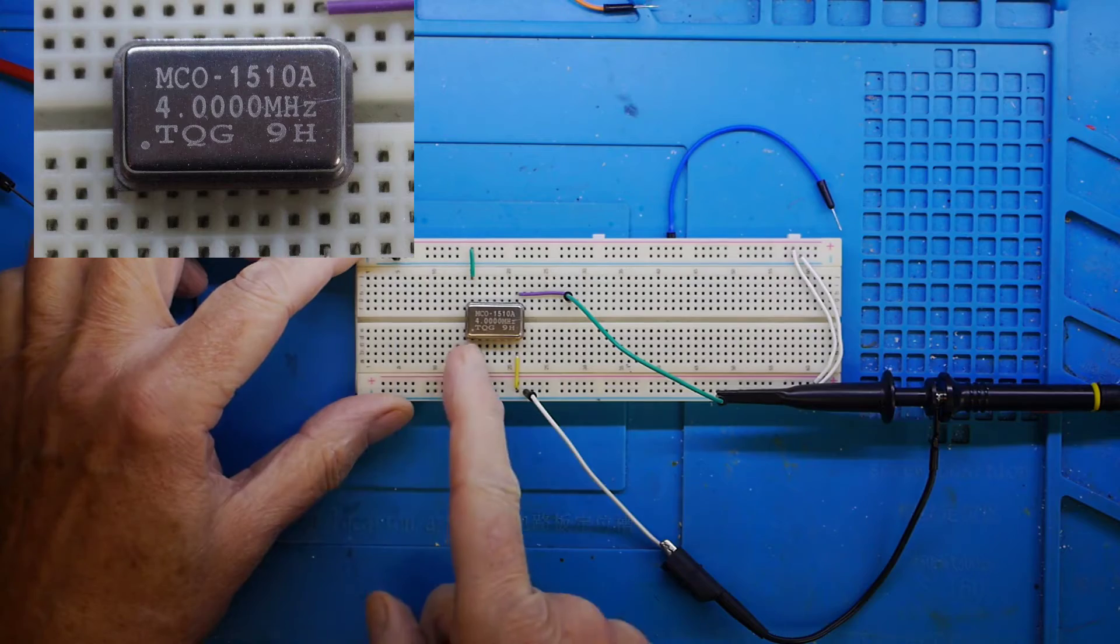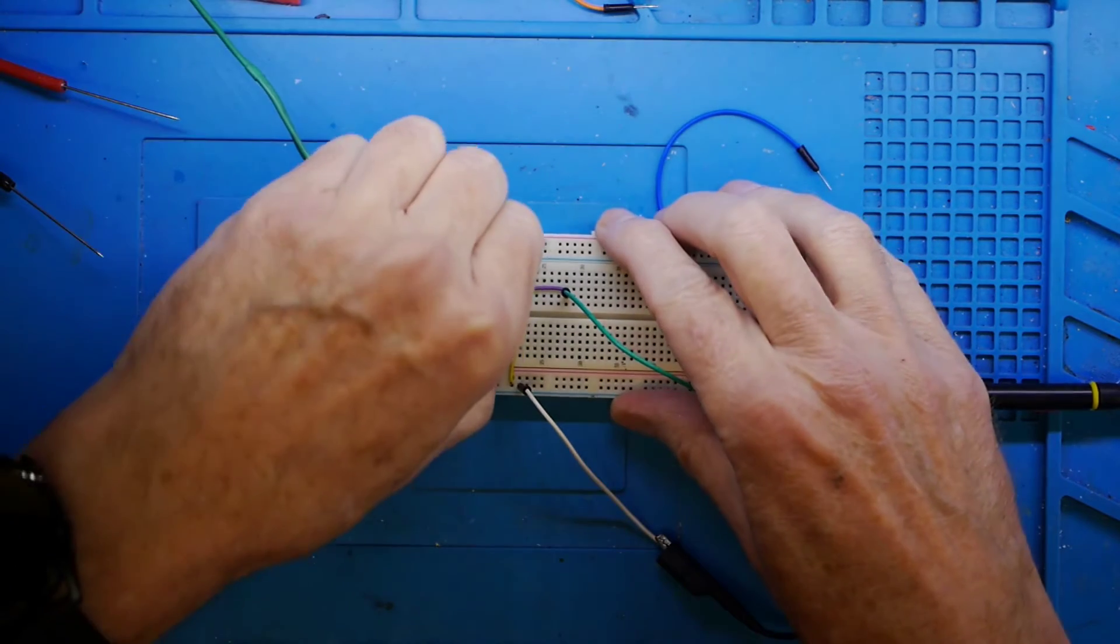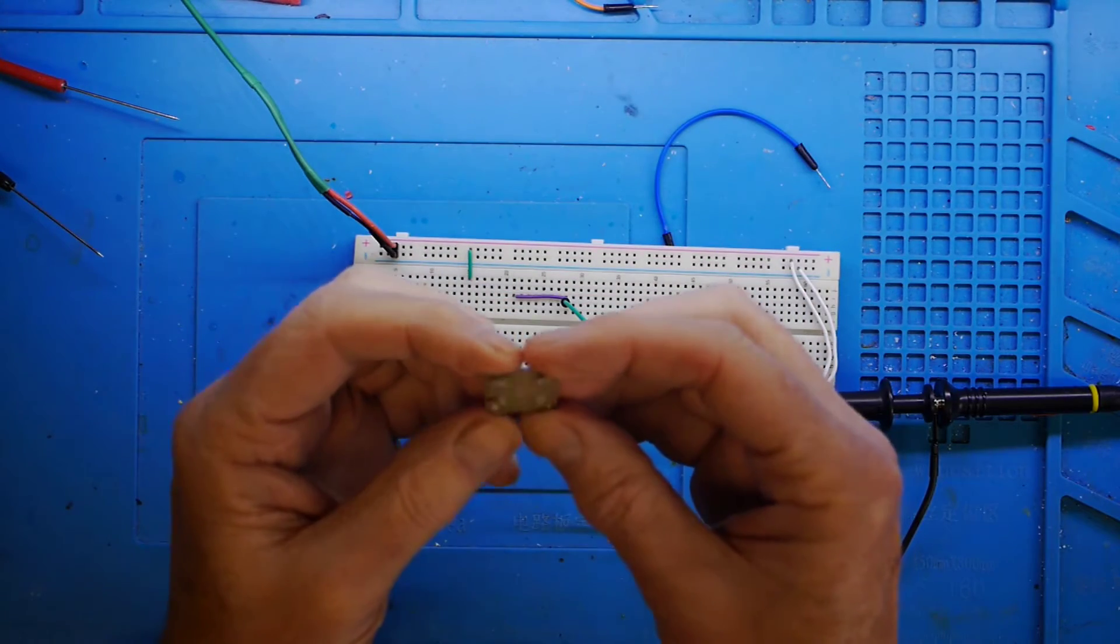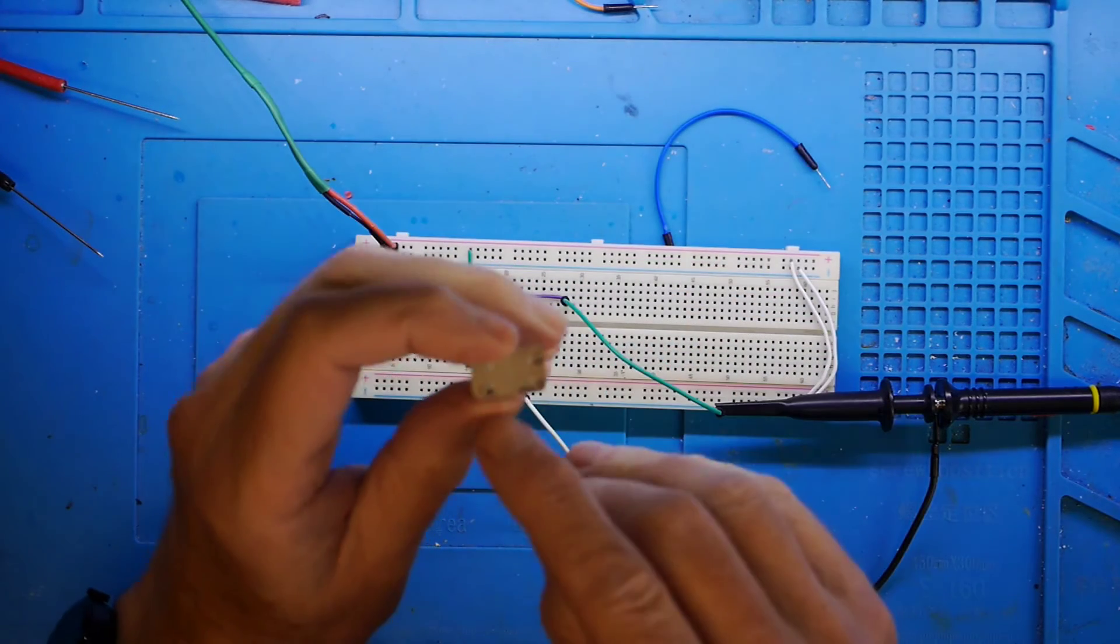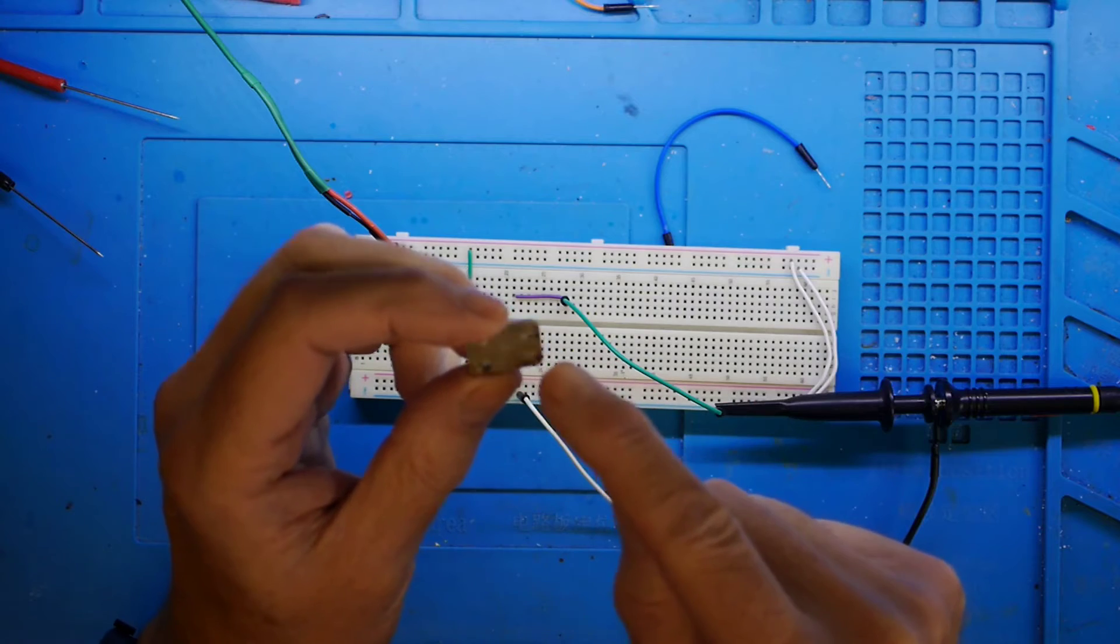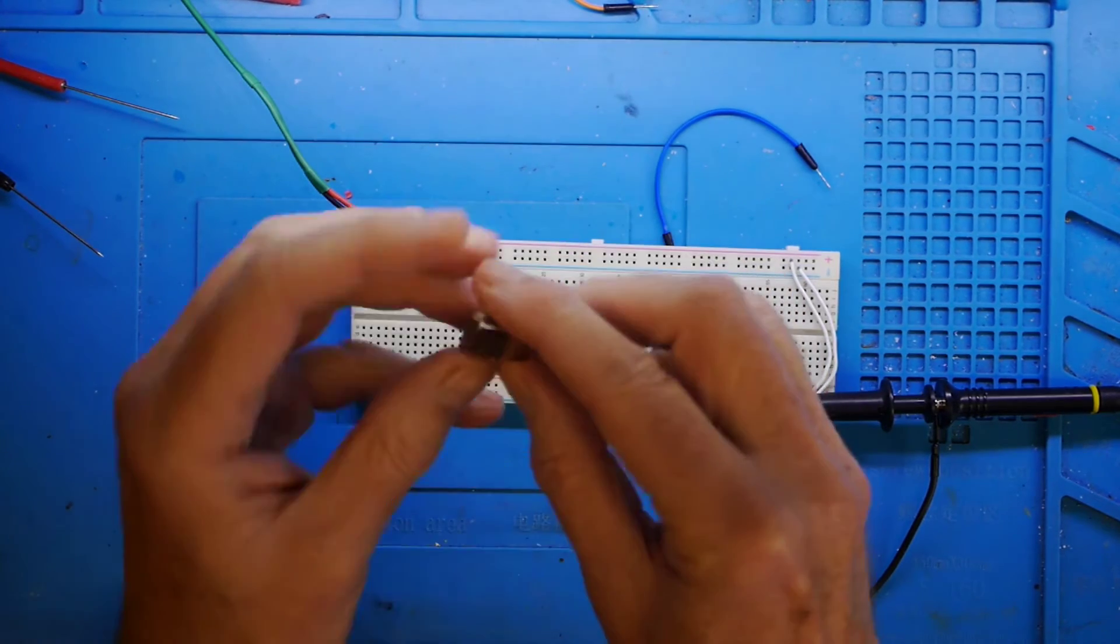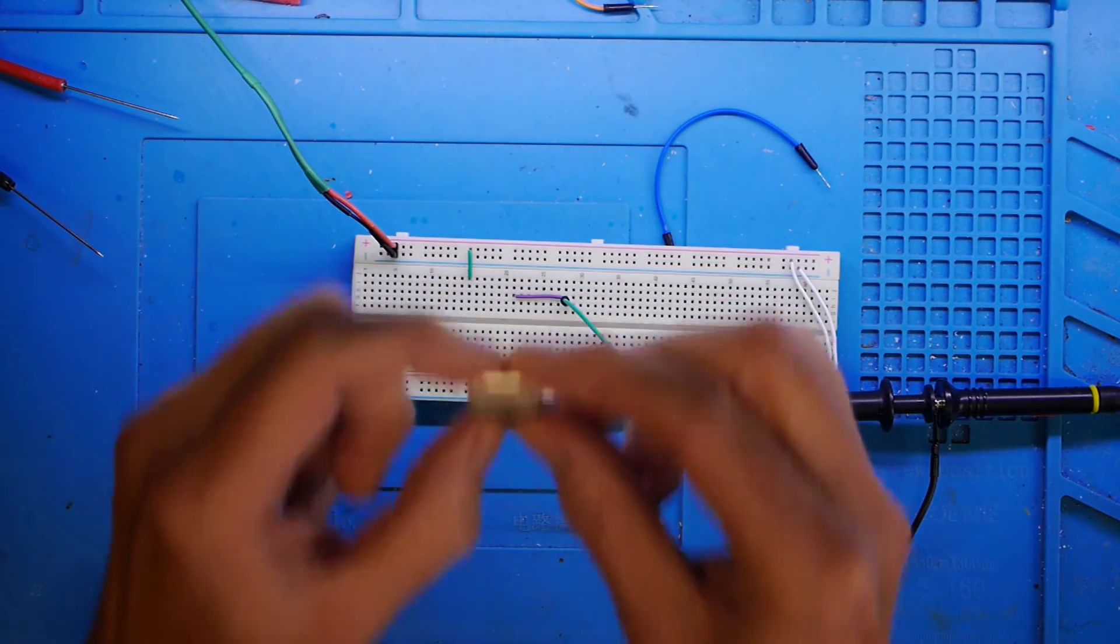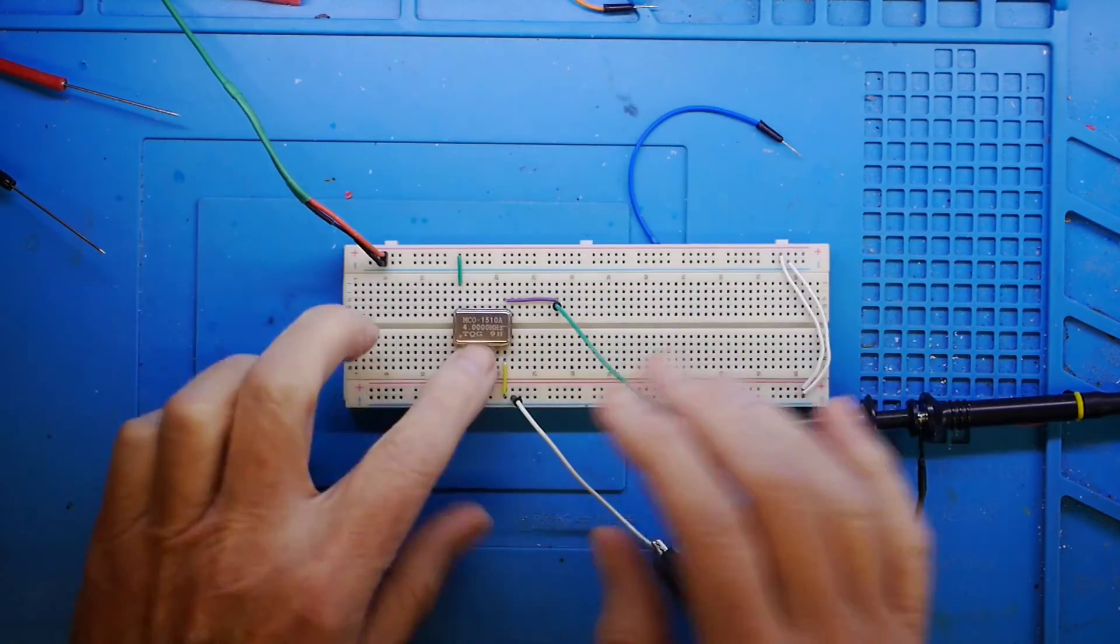So we'll look at the output in a moment, but these couldn't be easier to use. And if I just pull that out of the board, you can hopefully see there I've just marked on what the connections are. We've got negative, positive, that's supply voltages, that's also ground, and the output on that pin there. So a very straightforward piece of kit to use. Let's have a look at the grabs of the scope and the spectrum analyzer from this particular chip.